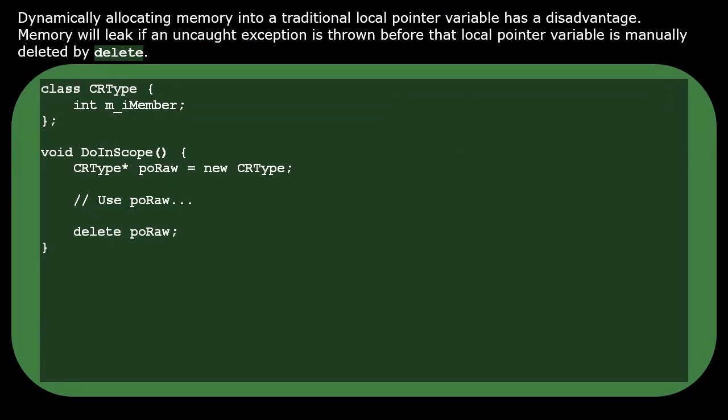Dynamically allocating memory into a traditional local pointer variable has a disadvantage. Memory will leak if an uncaught exception is thrown before that local pointer variable is manually deleted by delete.